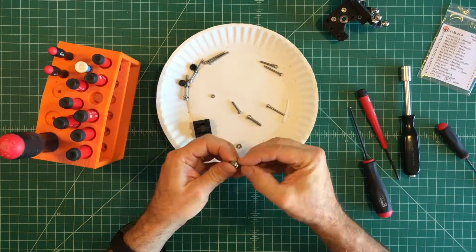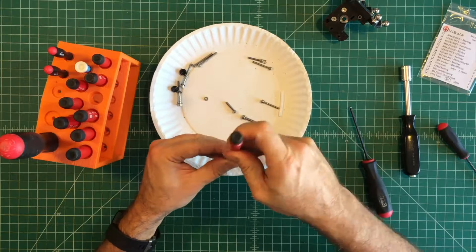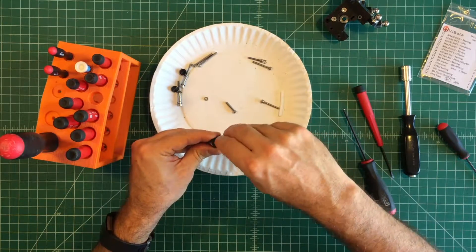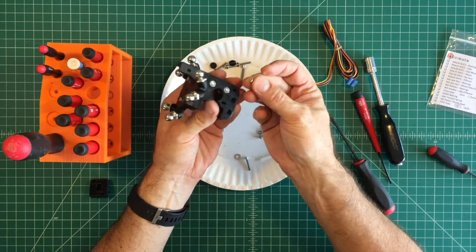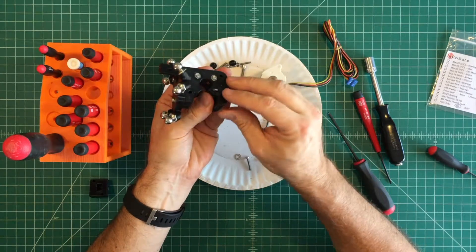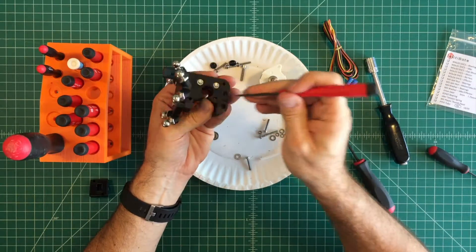Once completed add the bearing assembly to the extruder idler using the same method. Insert an M3 nut into the lower idler screw nut trap. Note this must be done prior to attaching the drive motor.